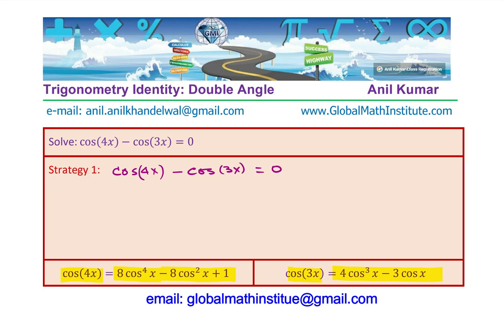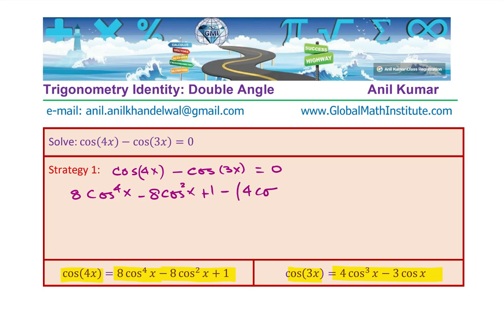You can write all these terms, which are 8 cos to the power of 4x minus 8 cos square x plus 1 minus all this, which is 4 cos cube x minus 3 cos x equals to 0. That becomes a quartic equation in cosine. You may have to rearrange the terms factor and then solve to get the solution.